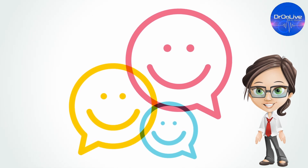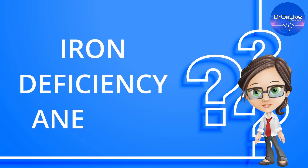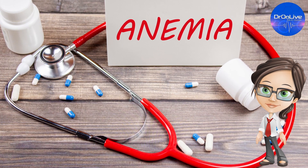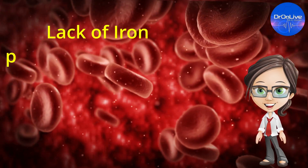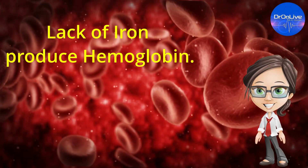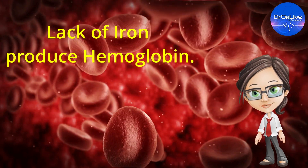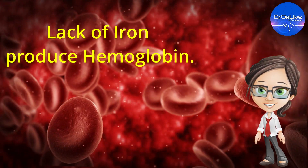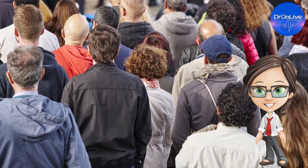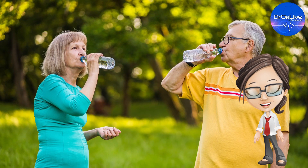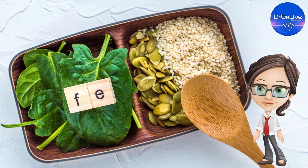Let us continue discussing the most common type — iron deficiency anemia. We all know that hemoglobin gives the red color to the blood. Iron deficiency anemia is a condition in which the body does not have enough iron to make hemoglobin. This is the most common type of anemia seen globally, and it can be easily managed by following a healthy lifestyle and good dietary habits.